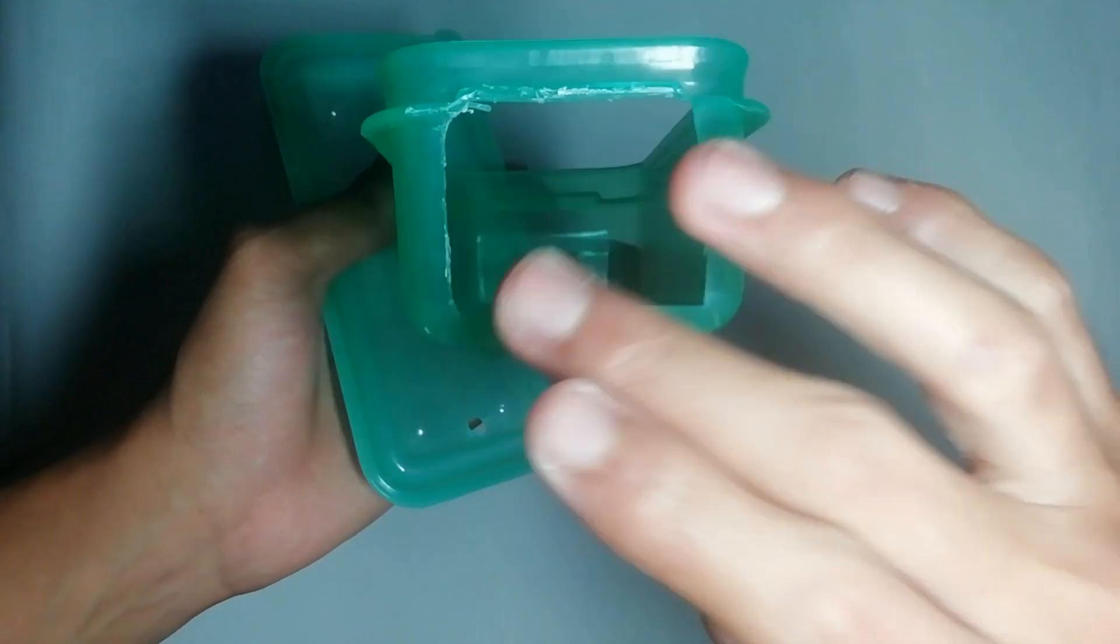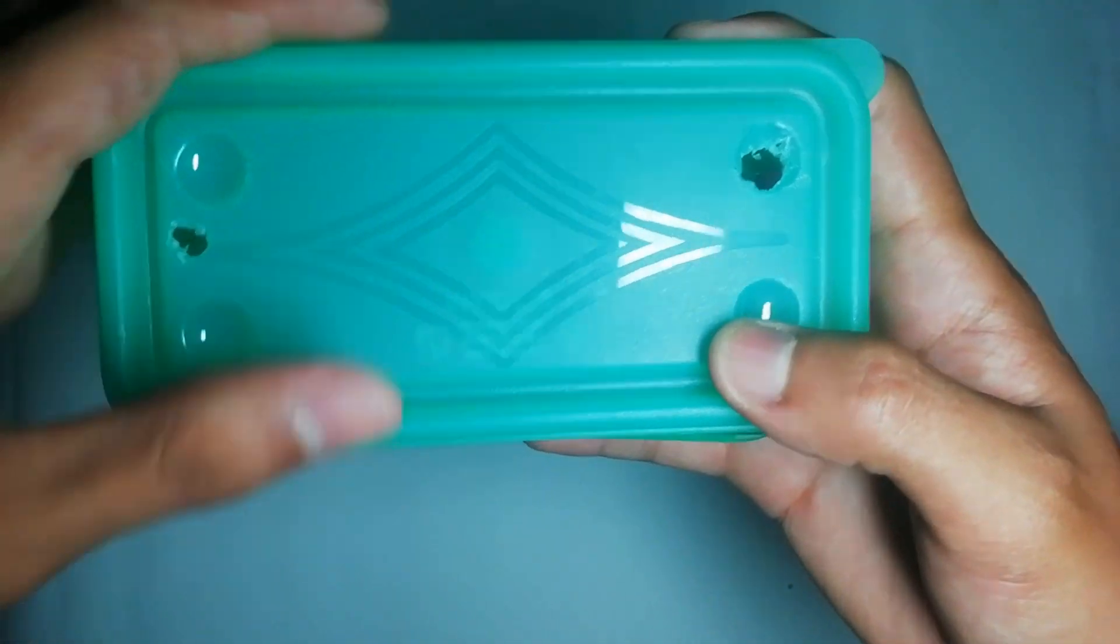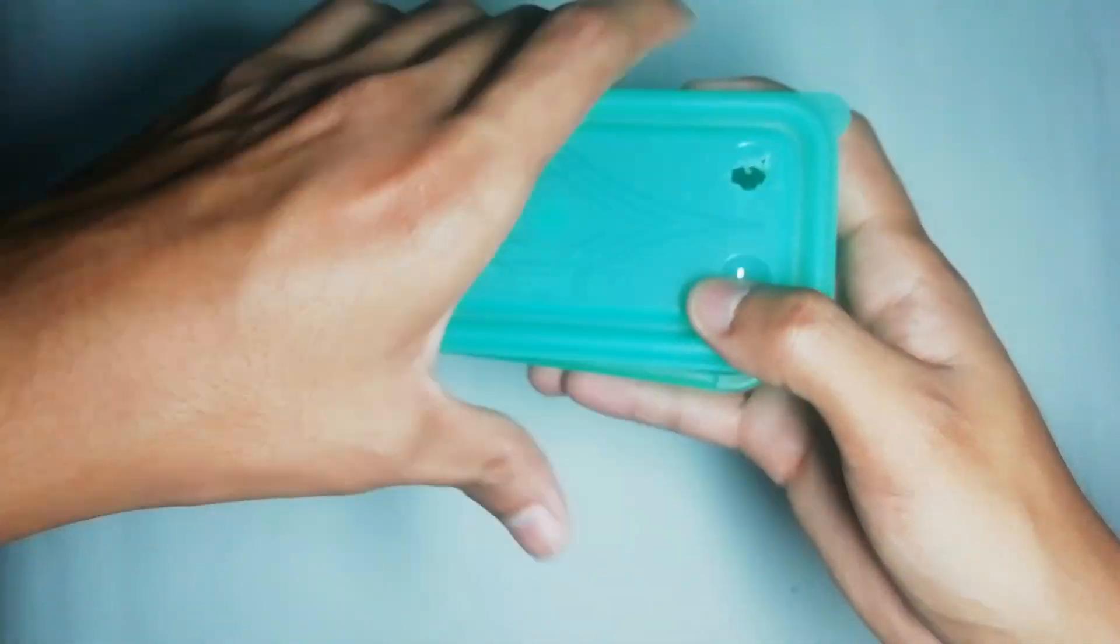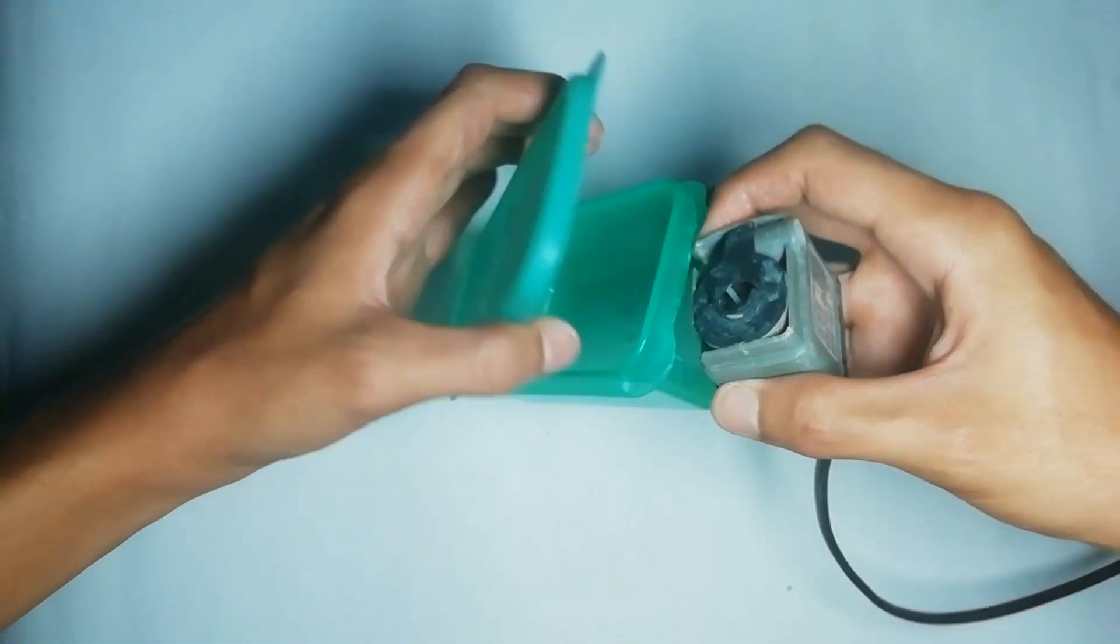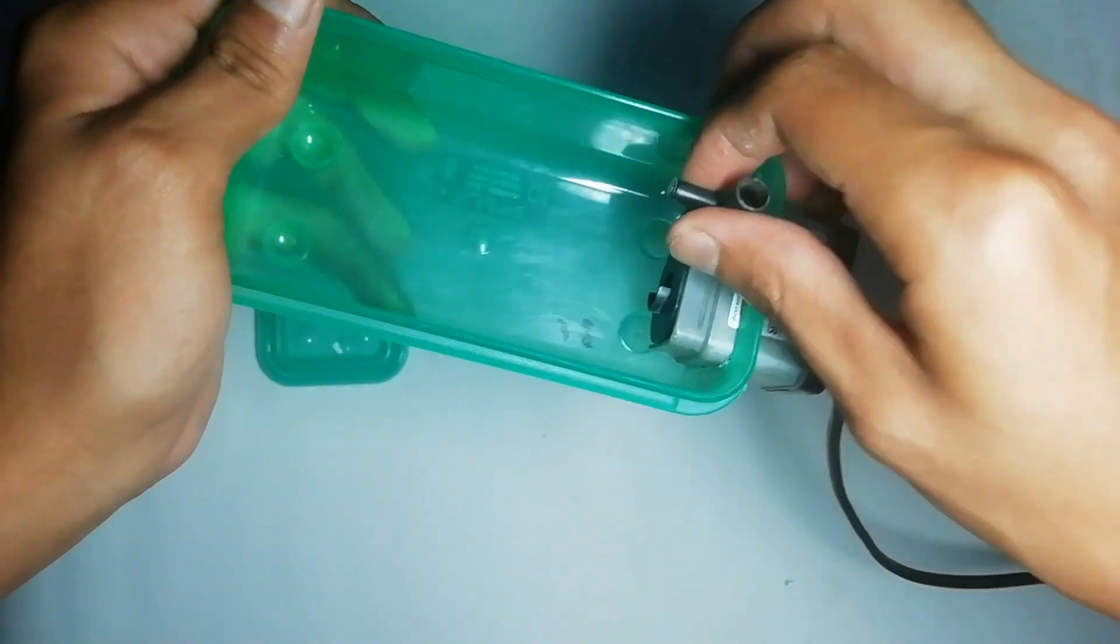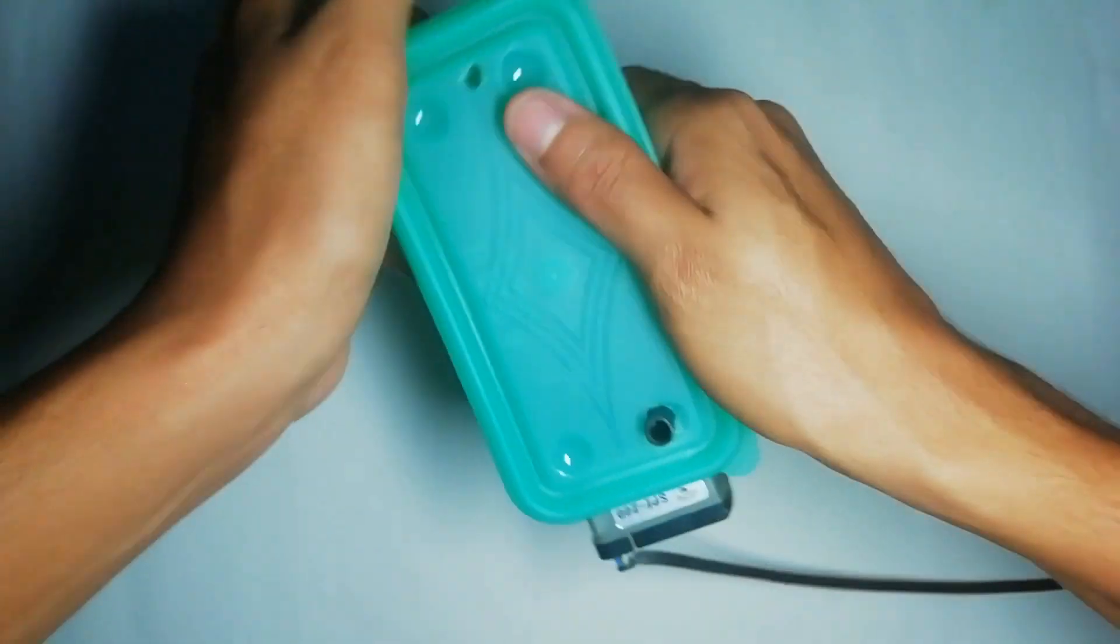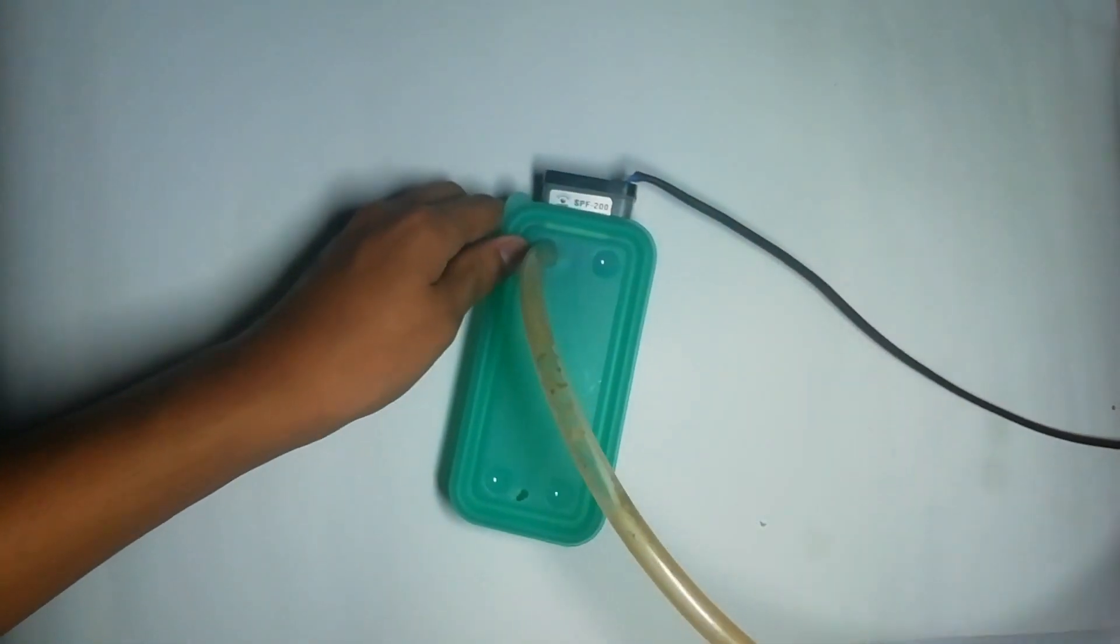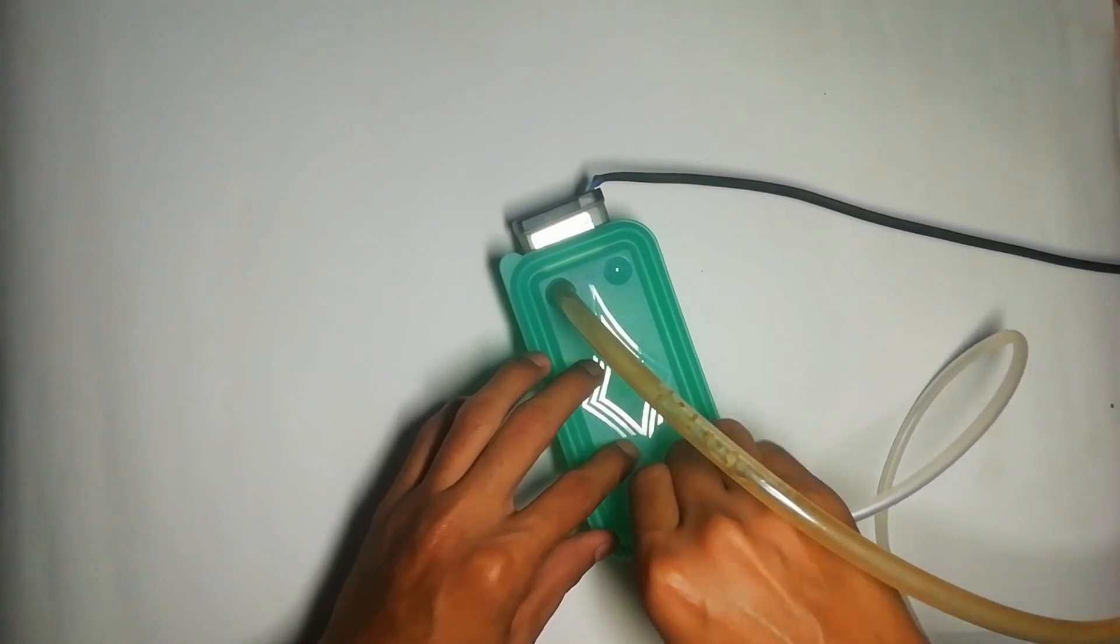Bueno amigos, ya hice las tres perforaciones. Por aquí va a estar la bomba, por aquí va a entrar la mitad. Aquí está la entrada de la manguera que va conectada a la bomba. Aquí va a entrar el agua sucia del estanque, por aquí va a salir y por aquí va a estar la bomba. Les voy a hacer una muestra de más o menos como queda. Ya solamente falta agregarle el material filtrante. Tienen que ajustarlo muy bien a las medidas. Aquí entra, queda ajustado.